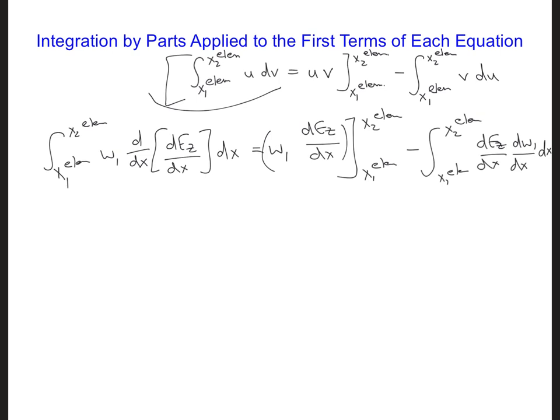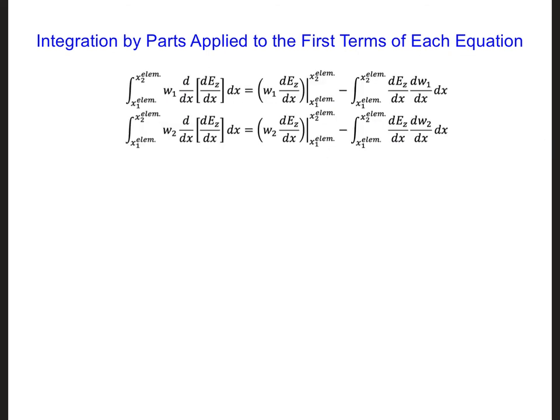We would get an analogous equation for the first term of the second node equation. So here I've written out more clearly the equation that we just developed on the previous slide. That's this one right here. And in the second equation, I've included the analogous integration by parts applied to the first term of the second element equation.